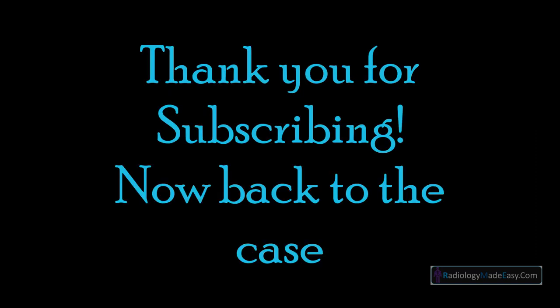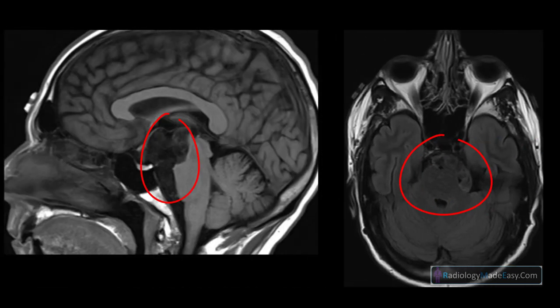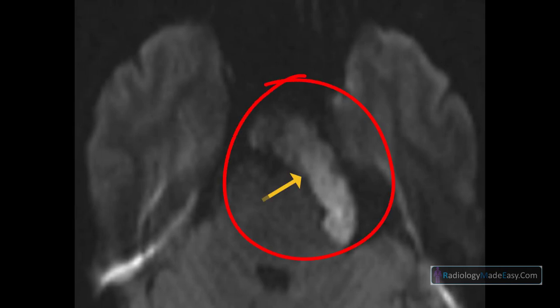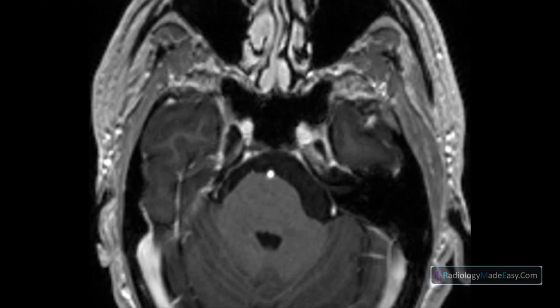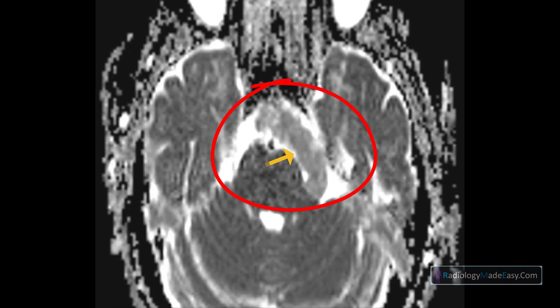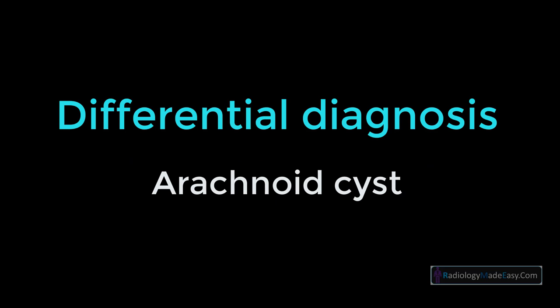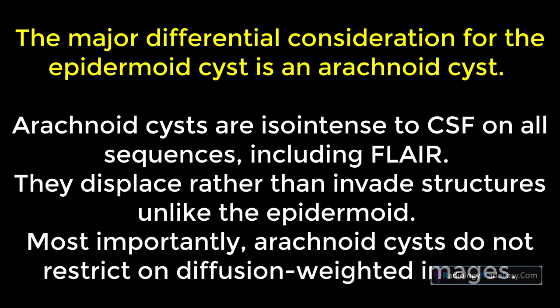These images demonstrate a lobulated T1 hypointense, T2 hyperintense, T2 FLAIR hyperintense, and non-enhancing mass centered in the suprasellar and interpeduncular cisterns. The mass demonstrates restricted diffusion and is compatible with an epidermoid cyst.